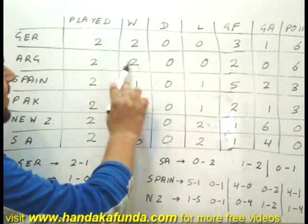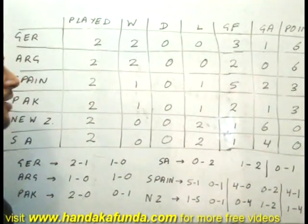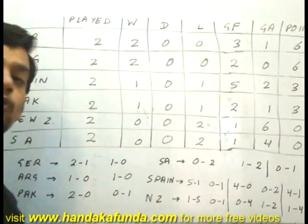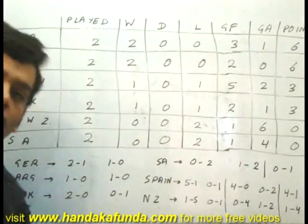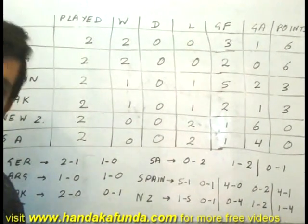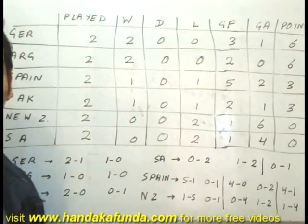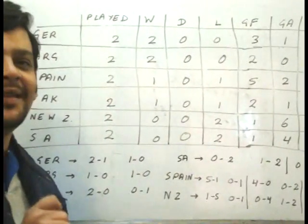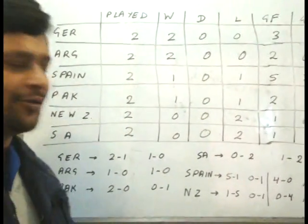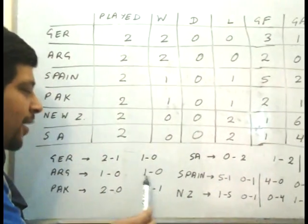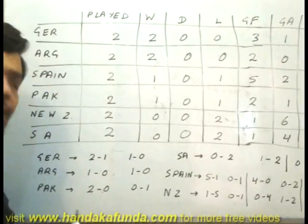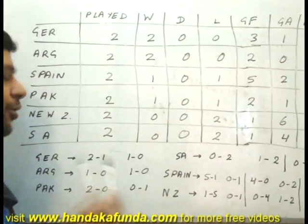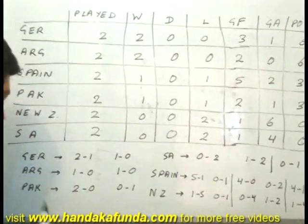Very similarly, Argentina has also won both its matches. It has scored only two goals. How can it win two matches with two goals? In only one way — it has scored 1-0 in every match. So for Argentina also, we are sure that it has scored 1-0 and 1-0.